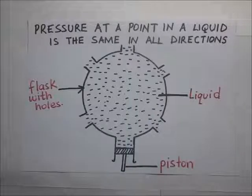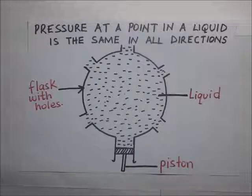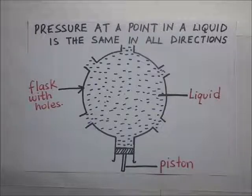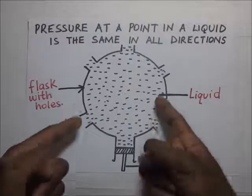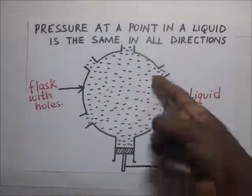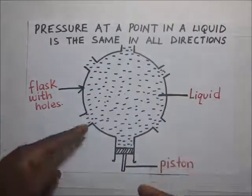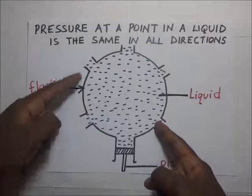Pressure at a point in a liquid is the same in all directions. This is a property of pressure in liquids. To demonstrate this, we have a flask right here — this flask has got holes around it.